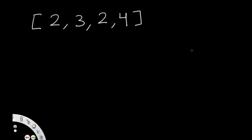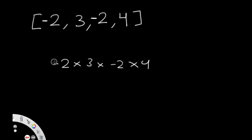What's our second condition? Let's change the first and third values to negative 2. Now we have two negatives. When you multiply negative 2 into 3 into negative 2 into 4, the negatives cancel out, so it's essentially the same as 2 into 3 into 2 into 4. When you have an even number of negatives, they get cancelled out and the final maximum product is the product of all elements.